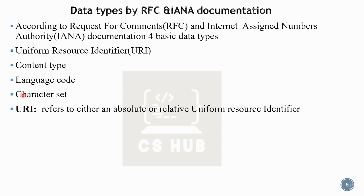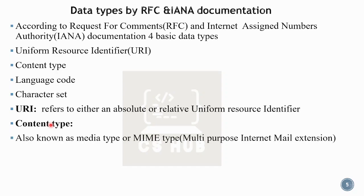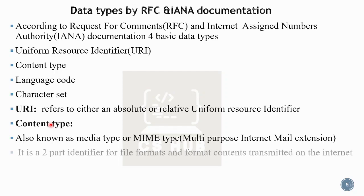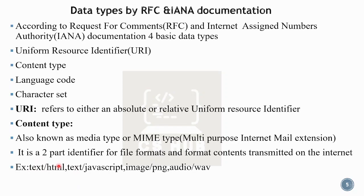URI is a Uniform Resource Identifier. It refers to either an absolute or relative Uniform Resource Identifier. For content type, you can use a MIME type — Multipurpose Internet Mail Extension — which is a two-part identifier for file formats and content transmitted on the internet. Examples include text/HTML, text/JavaScript, image/PNG, audio/WAV, and text/CSS for stylesheets.